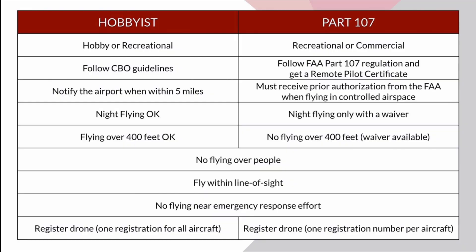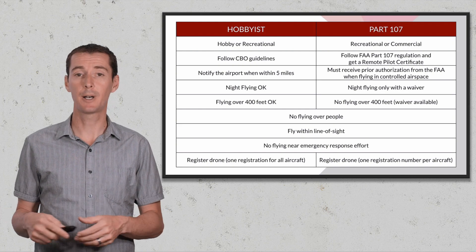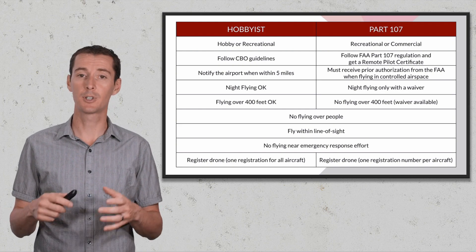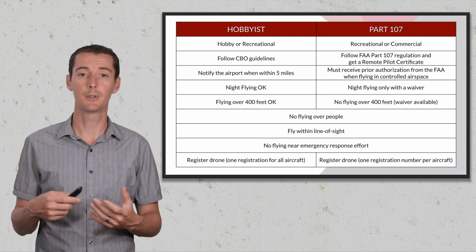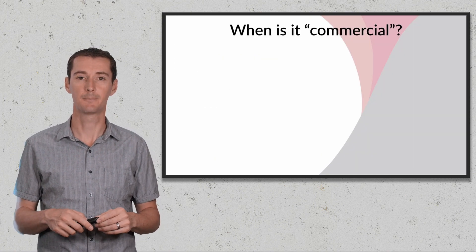The last thing I want to touch on is registration, which is a little different between the two. As a hobbyist you have to register your drone, but you only need one registration — you get a number and can put that on all your devices. As a Part 107 pilot, you have to register each drone individually and each has a different number.